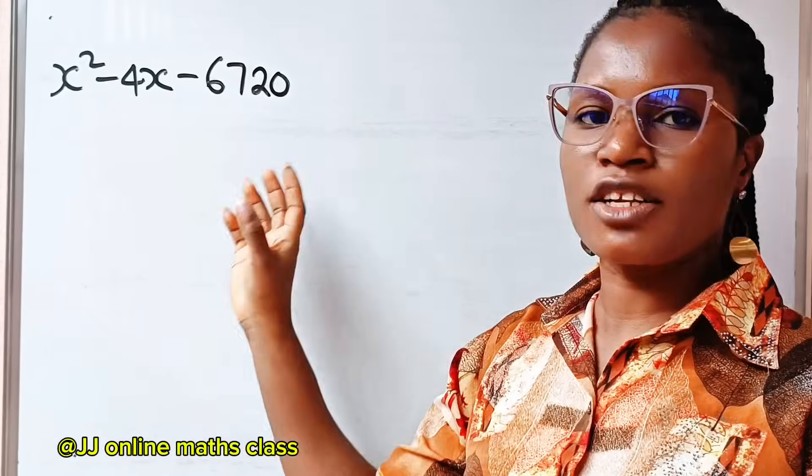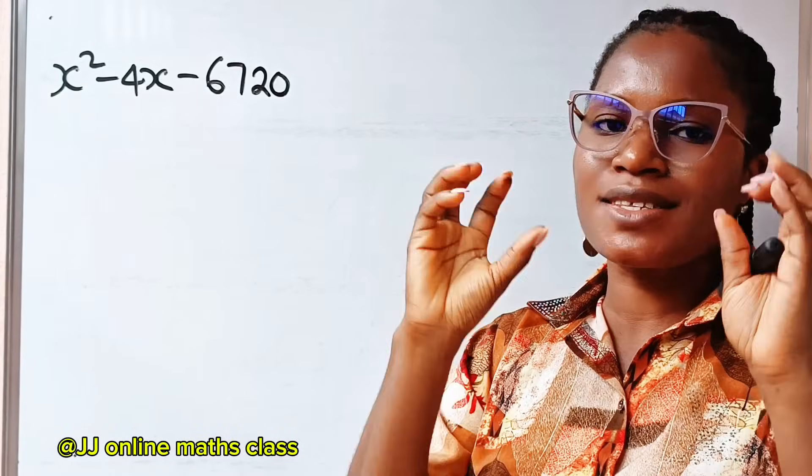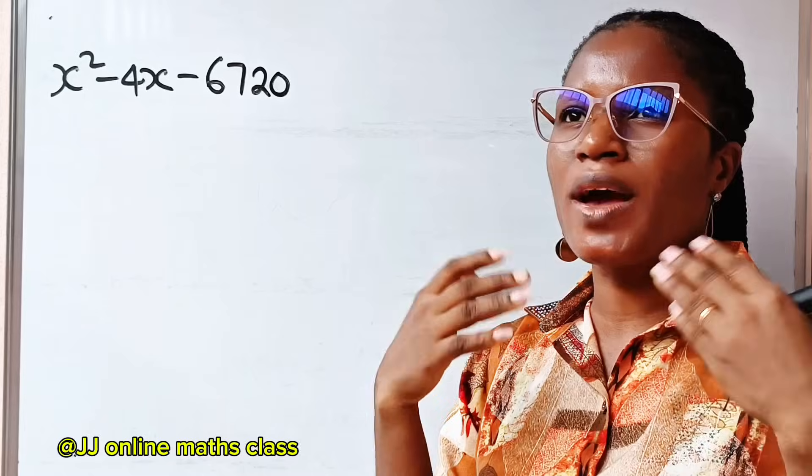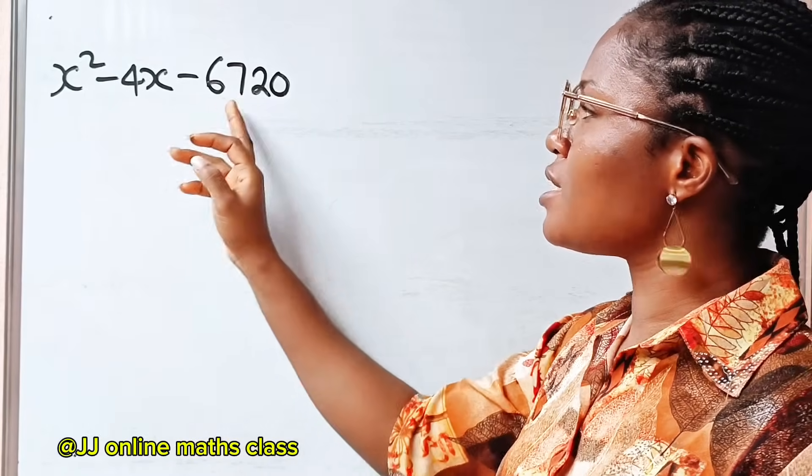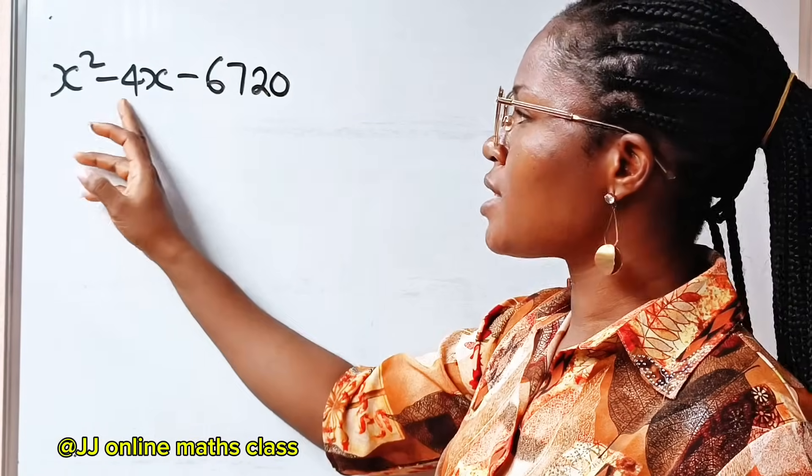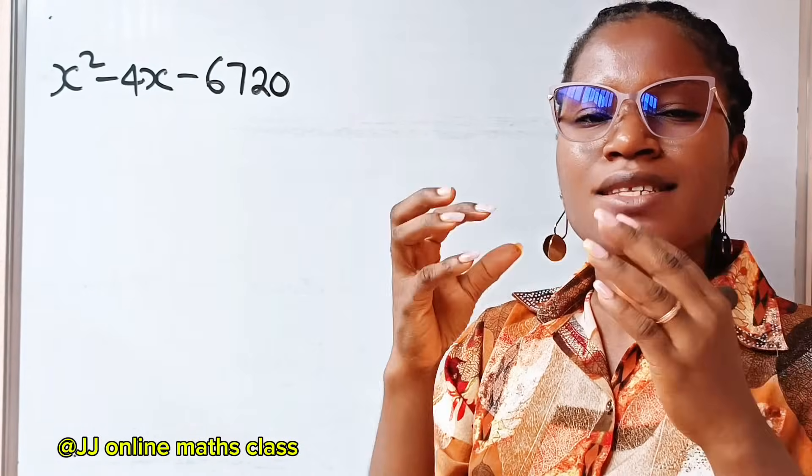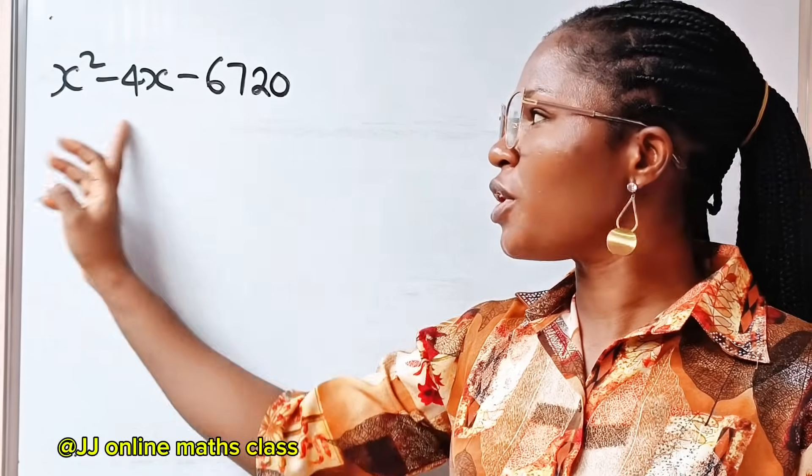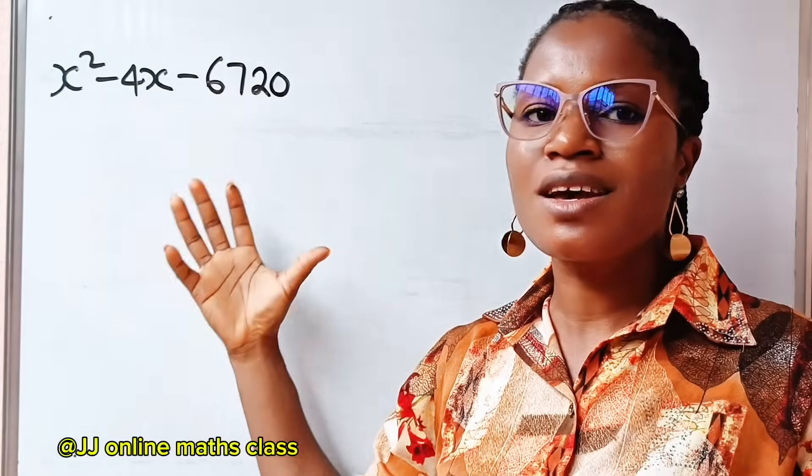To factorize this large number with the normal guessing method, what do I mean by guessing method? We are taught that when you have something like this, you look for two factors of this that when you add them together, you get minus 4. Now, that guessing method will be difficult if we use it in this type of large expression.